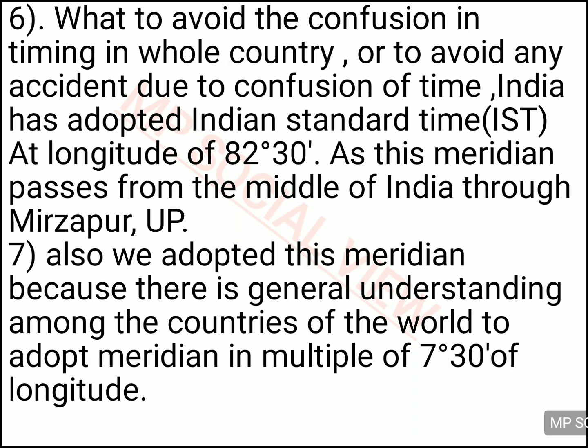If every place adopted its own longitude to decide its time, it would create confusion — possibly even accidents. For example, a train may depart at one time but other places would assume a different time, causing confusion. To avoid this, we adopted our middle longitude as the Indian Standard Time. That middle longitude is 82 degrees 30 minutes, also called the Indian Standard Time Meridian. It passes through Mirzapur, Uttar Pradesh.